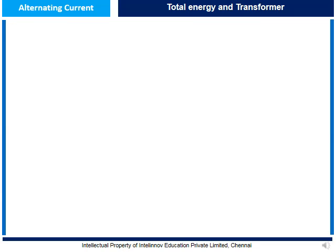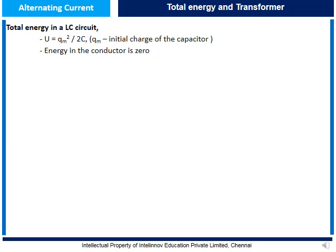The total energy in an LC circuit is given by U equal to QM²/2C, where QM is the initial charge of the capacitor. The energy in the inductor is zero at this point.